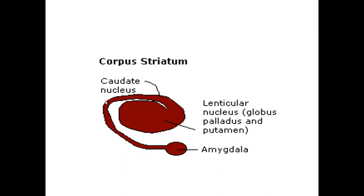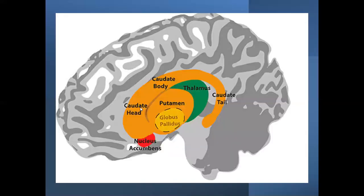Here you can see the caudate nucleus and the lentiform nucleus. The caudate nucleus has a head, body, and tail. The putamen and globus pallidus together form the lentiform nucleus, and this is the thalamus.